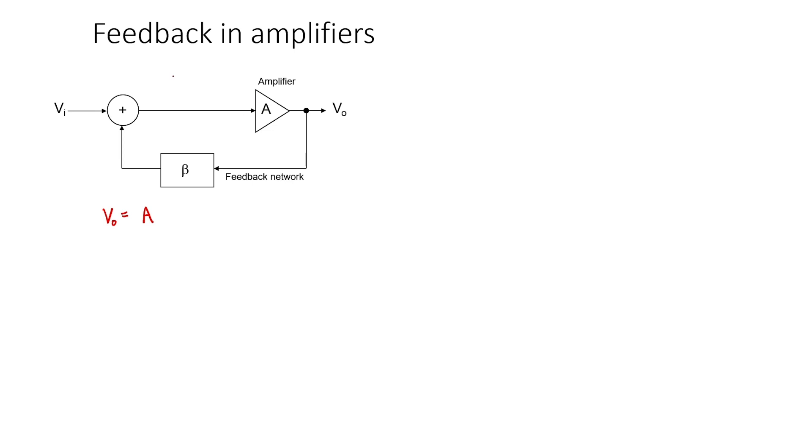The output voltage is the gain A times the sum which appears just before the amplifier. Let's move the ABV0 over to the left side of the equation.